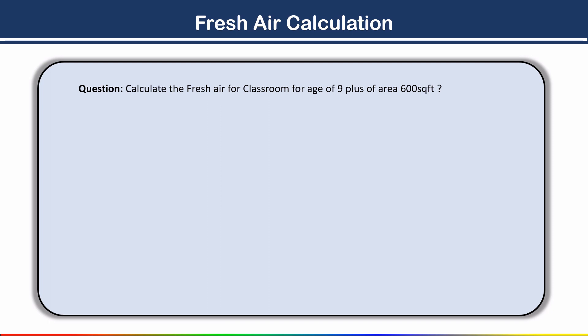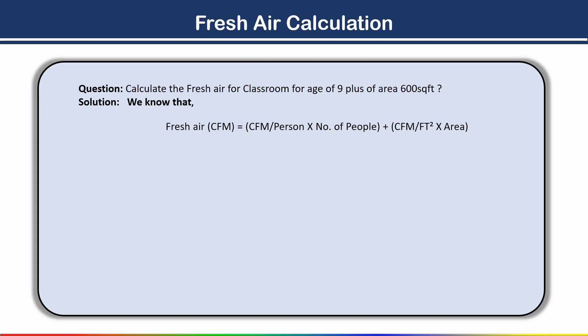Now here I have taken one example question to calculate the fresh air CFM. We have to calculate the fresh air for a classroom for age 9 plus, with an area of 600 square feet. So here we have a classroom where age 9 plus students are sitting and the total area of that classroom is 600 square feet. To find out the fresh air CFM, we use the ASHRAE ventilation standard formula: Fresh Air CFM.